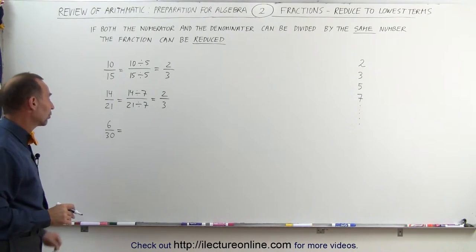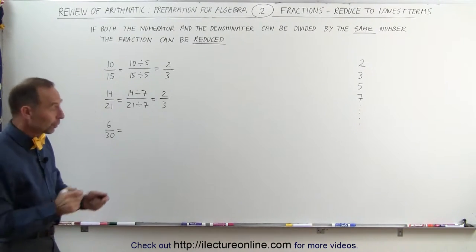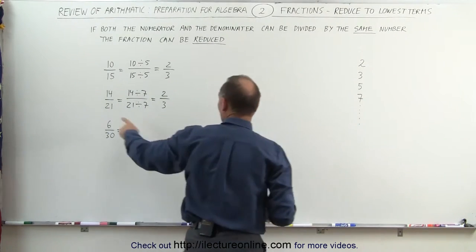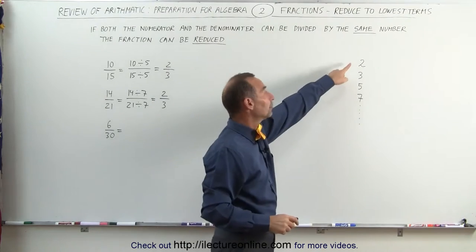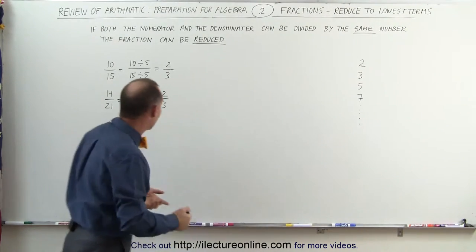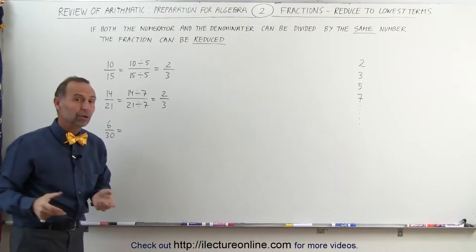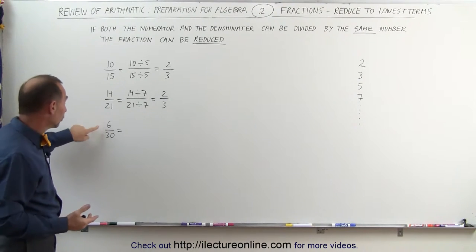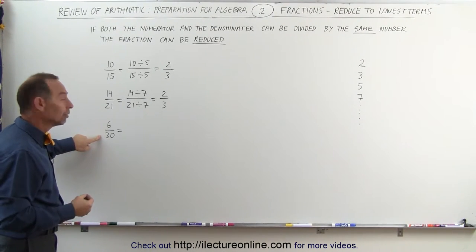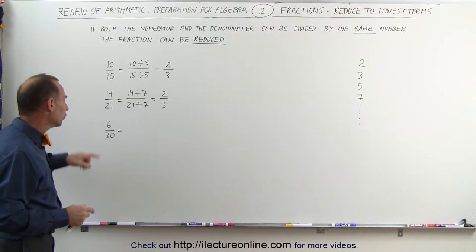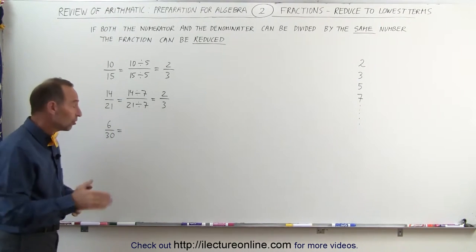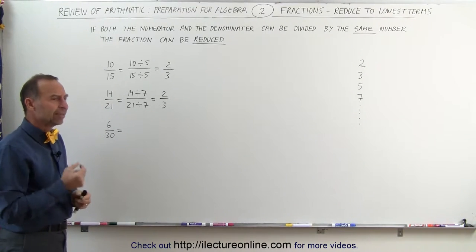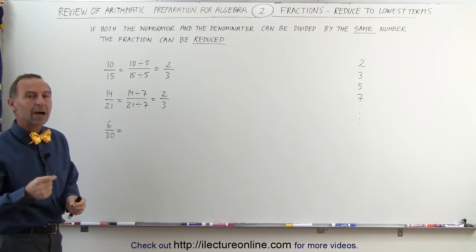Here we have six divided by thirty. Now notice, if we go down the line here, we can see that both the numerator and the denominator can be divided by two. The rule is, if they end in an even number, they're divisible by two. Six is an even number, divisible by two. Thirty is an even number, divisible by two. But you can also realize that both six and thirty are divisible by six. Hmm, six is what we call the greatest common factor.